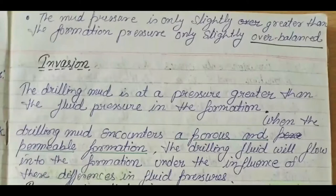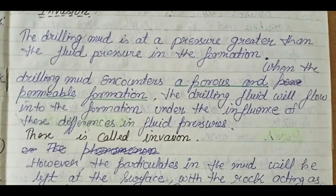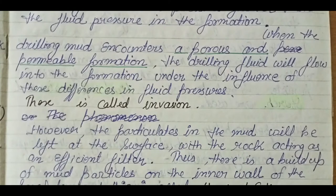The drilling mud is at a pressure greater than the fluid pressure in the formation. When the drilling mud encounters a porous and permeable formation, the drilling fluid will flow into the formation under the influence of this pressure difference, and this process is called invasion. This porous rock will behave as a filter, separating the mud into its liquid and solid constituents.